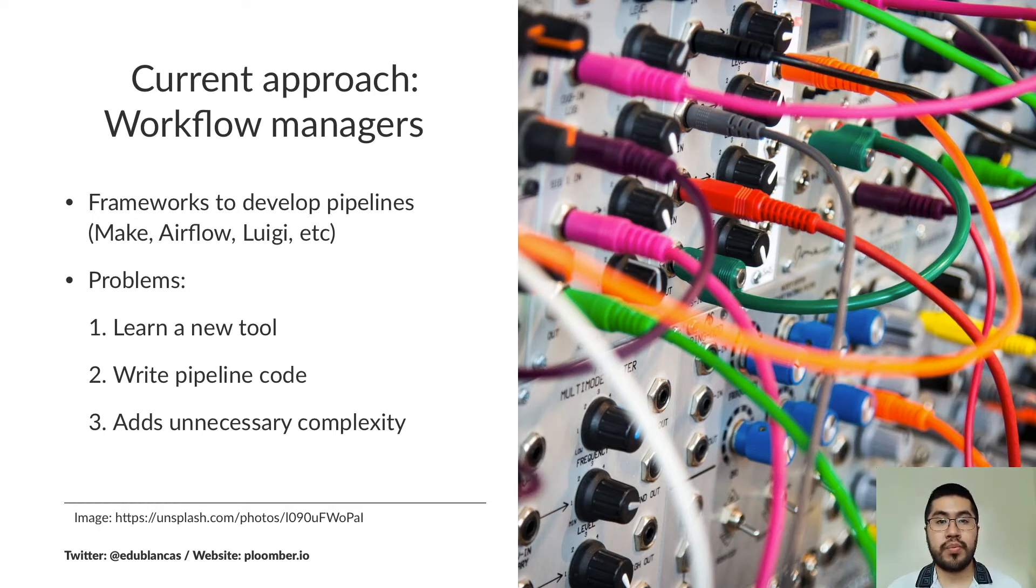What's the current approach to solve this problem? There's a set of tools called Workflow Managers that allow us to write code and turn it into a pipeline. There's really a lot of options: Make, Airflow, Luigi, etc. What are the common problems that I've encountered when using these tools? The first and most obvious is that we have to learn a new tool. We have to read some documentation and become familiar with different concepts. The second one is that we have to write pipeline code. It's not code that does any kind of analysis. It's just code that we need so that we can specify our code as a data pipeline. And finally, some of these tools also add a layer of complexity because they come with features that we may not need, especially during early stages of development, but we still have to configure them.